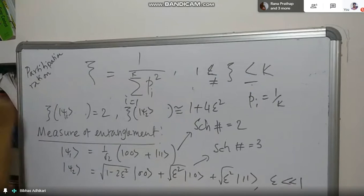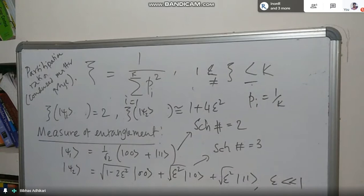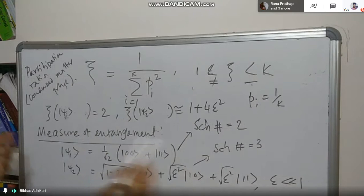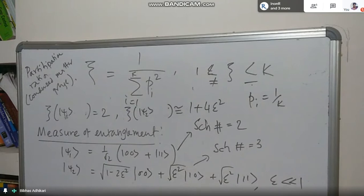This concept can be used to define what we call the participation representation, originating from condensed matter. The question is, if you define it differently, for different measures, although the maximum entanglement may be fixed, for other states the amount of entanglement may vary depending on your measure.